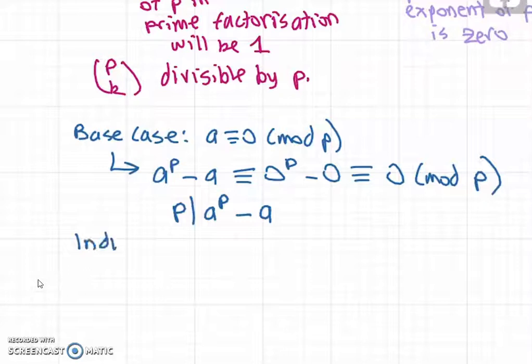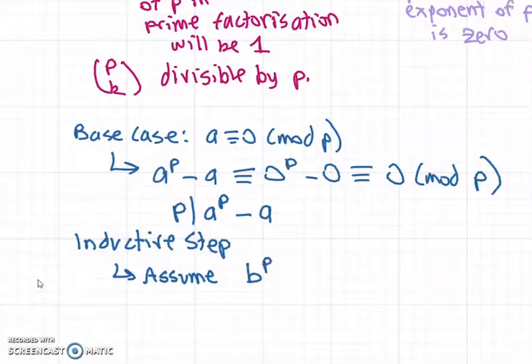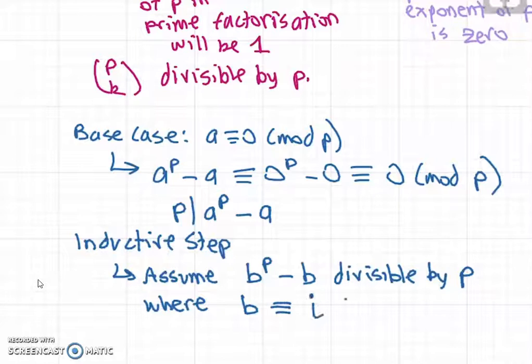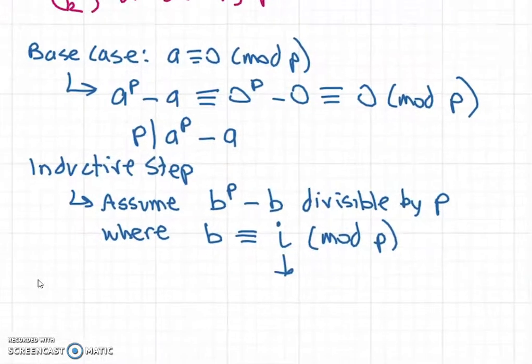For the inductive step, assume b^p minus b is divisible by p, where b is congruent to i mod p, where the number i is between 0 and p minus 2.